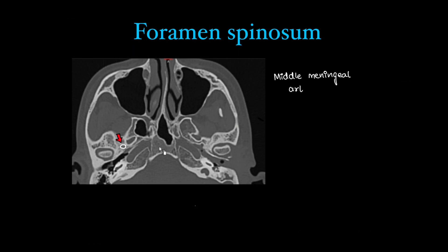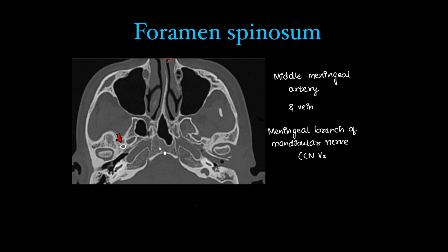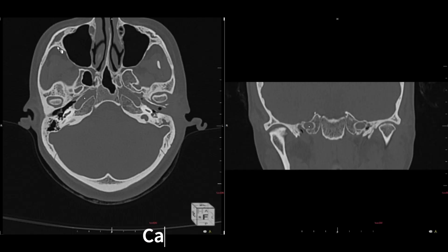The most important structure is the middle meningeal artery and vein passing through the foramen spinosum. It also has the meningeal branch of the mandibular nerve, which is a branch of the third segment of the trigeminal nerve. Those are the vascular and neural structures through the foramen spinosum.